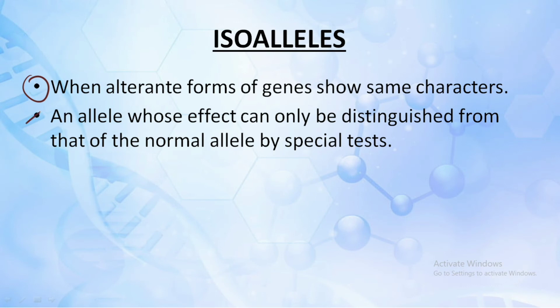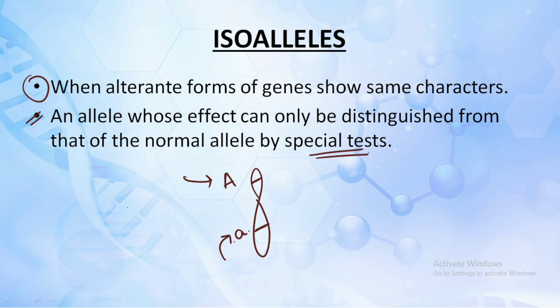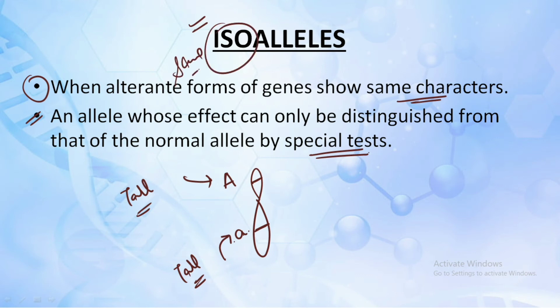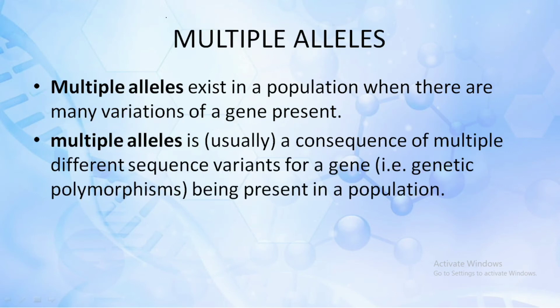Now let's look at isoalleles. Isoalleles means that the alternative forms of the same gene show the same character. An allele whose effect can only be distinguished from that of the normal allele by special tests. For example, consider capital A and small a on a chromosome — irrespective of one being dominant and the other recessive, both of them encode for the tall character. The alternative forms encoding for the same character — this is what is shown by isoalleles. 'Iso' means same.